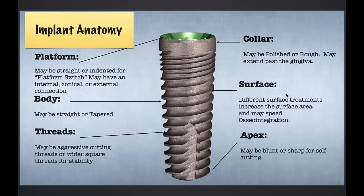SBM stands for soluble blast media — a process in which an implant is bombarded with hydroxyapatite particles and then rinsed off. The other type I personally use is HA (hydroxyapatite), which I tend to use in D3 and D4 bone. The apex of the implant can be sharp or blunt. Sharp apices are most common in minis where you under-prepare the osteotomy and rely on the implant to travel the rest of the distance. I personally like a blunt apex because I do a lot of guided implant surgery and I want my implant to go exactly where I planned it.